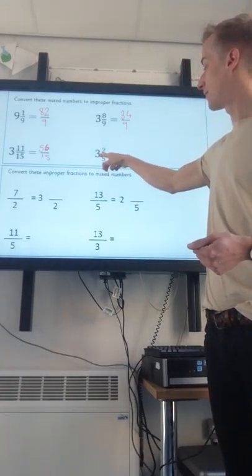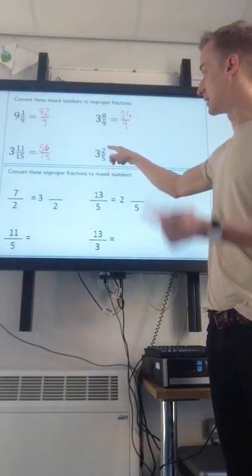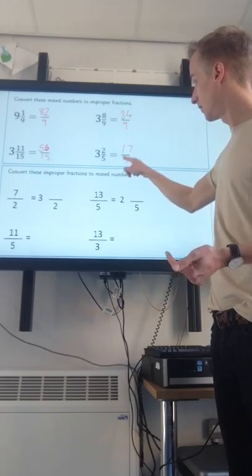And then over here, 3 times 5, or 5 times 3 is 15, 16, 17 fifths.